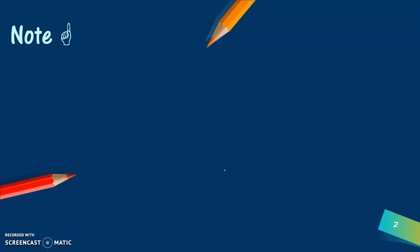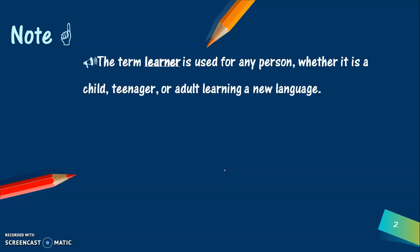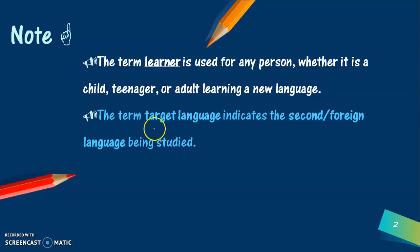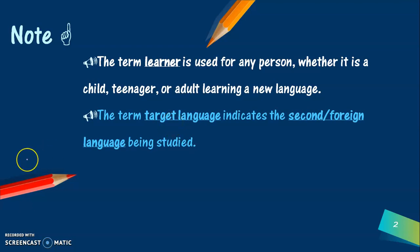From now on, we will be using several terms throughout the course. The first term is 'learner,' and by learner we mean any person learning a new language, whether it's a child, a teenager or an adult. The other term is 'target language,' which indicates the second or the foreign language that is being studied — no matter what language it is — differentiating it from the first or native language.